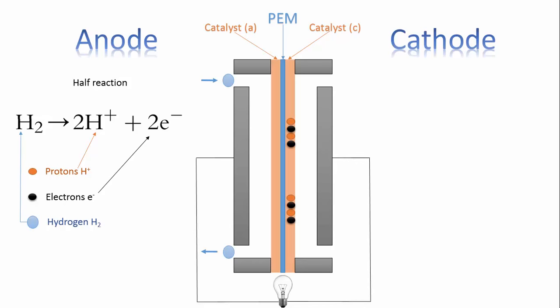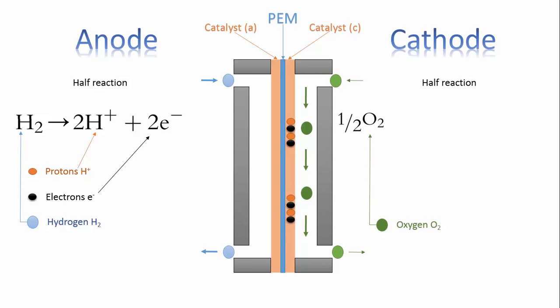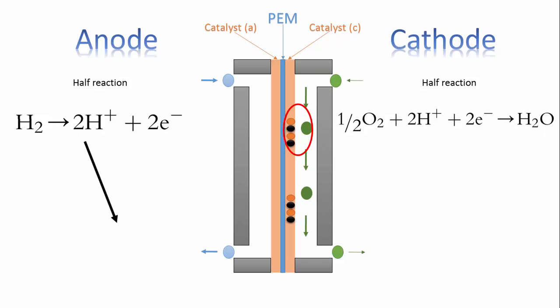Let's go to the cathode side half-reaction. Oxygen fed at the cathode flow channel now reacts with the available protons and electrons and ends up with a product of H2O. As the only emission from the fuel cell is pure water, it's a clean energy conversion device.